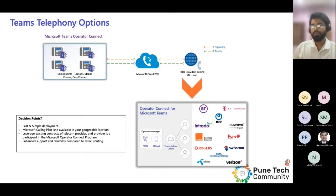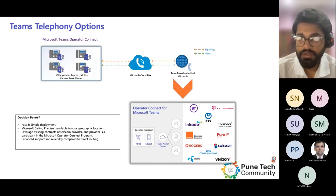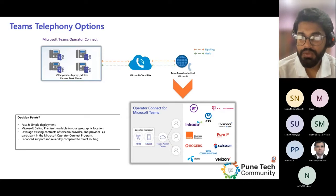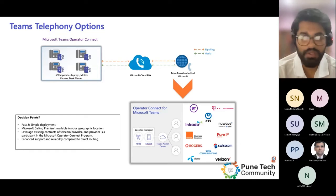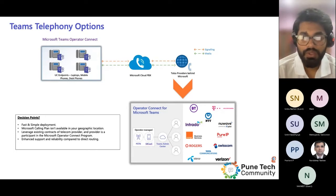Coming to the decision points for Operator Connect: the first factor is the same as with calling plans — you want fast and simple deployment with no dependency on on-premises devices. You just need the correct licenses and numbers assigned to your users by selecting the appropriate operator from the directory. The next factor is that the calling plan is not available in the region or country where you want PSTN services from Microsoft Teams. In those cases, you can opt for Operator Connect.